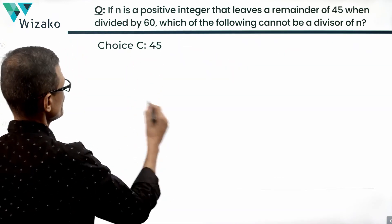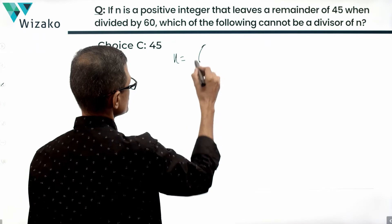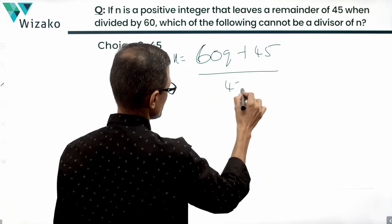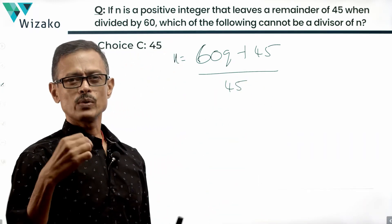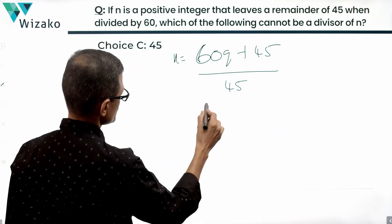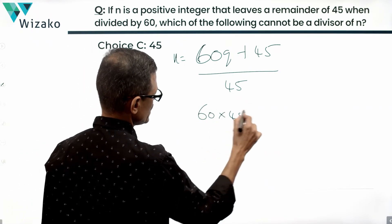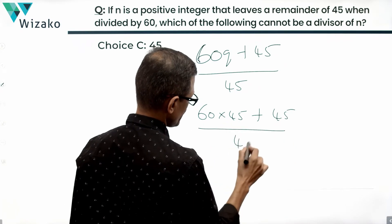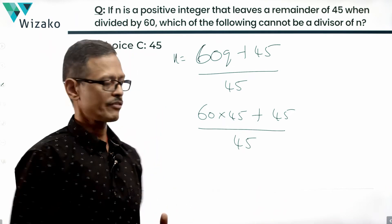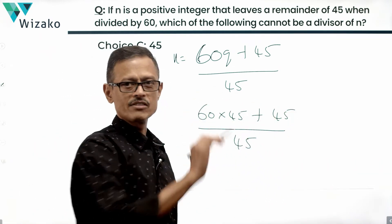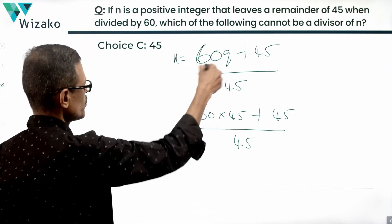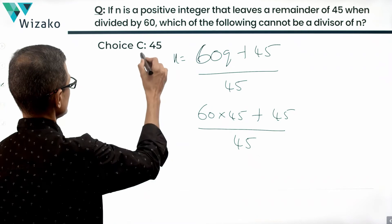Answer option C: the divisor is 45. We have n = 60q + 45. Is this divisible by 45? Take q = 45: then 60 × 45 + 45 = 45(60 + 1) = 61 × 45, which is divisible by 45. We have found one case where it is divisible, so this is also not the answer option.